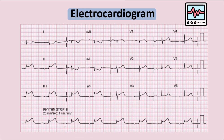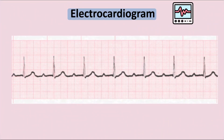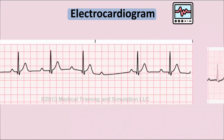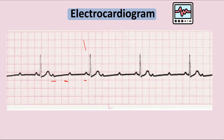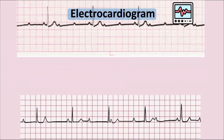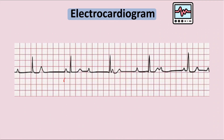Looking at ECG examples: constant prolongation of the PR interval indicates first degree AV block. Progressive prolongation of PR interval until a P wave is not conducted, then repeating, is Mobitz type 1. A 3:1 block shows three P waves to one QRS. In Mobitz type 2 there is constant normal PR with occasional dropped beats. When there is no relation between P waves and R intervals, that is third degree or complete AV block.